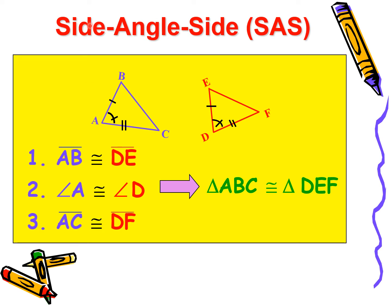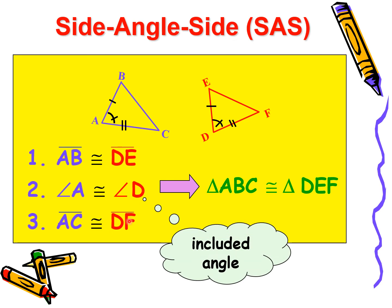Now let's move on to Side-Angle-Side, or SAS. Here, we are going to prove that triangle ABC is congruent to triangle DEF using SAS. First, AB is congruent to DE. Then, angle A is congruent to angle D. And the third, AC is congruent to DF. From here, we have the side, included angle, and side — so we have SAS congruence, and triangle ABC is congruent to triangle DEF by SAS.